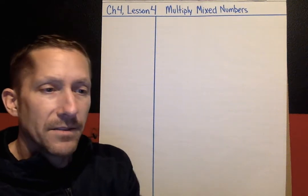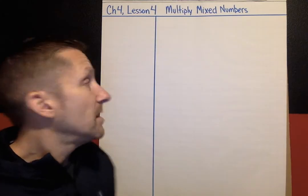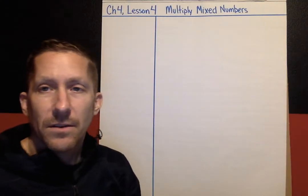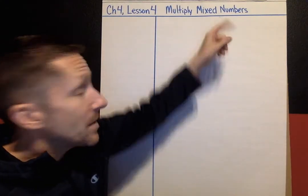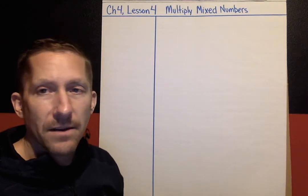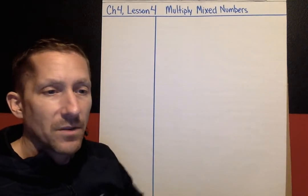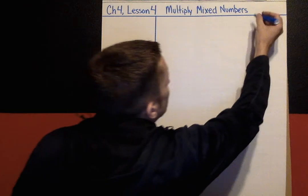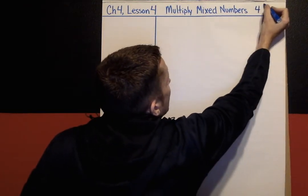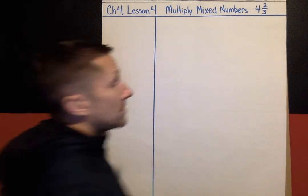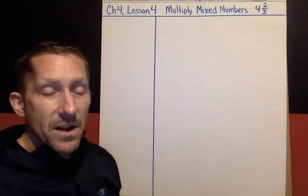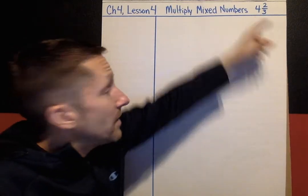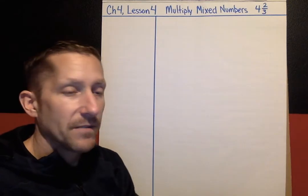What's up kids, this is Chapter 4, Lesson 4. Today we're going to be talking about how to multiply mixed numbers. Before I get started, a mixed number is a mix of whole numbers and a fraction. Here's an example: four and two-thirds — it's a mix of a whole number and a fraction. So today we're going to learn how to multiply when we have mixed numbers involved.